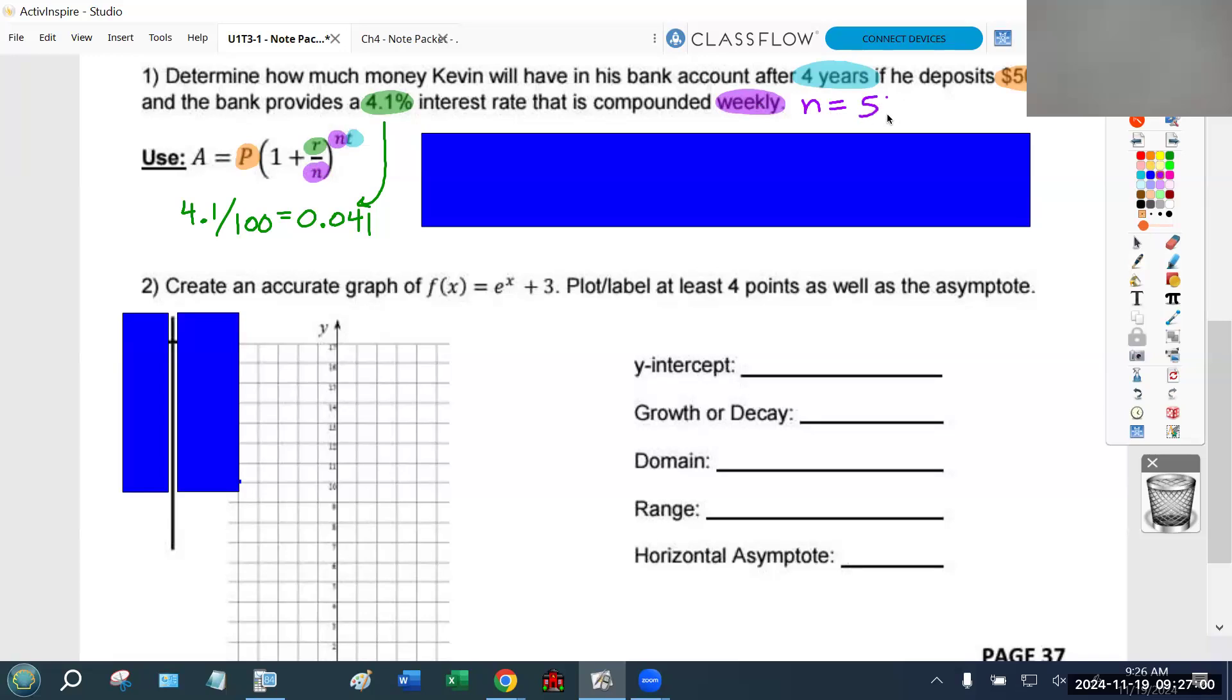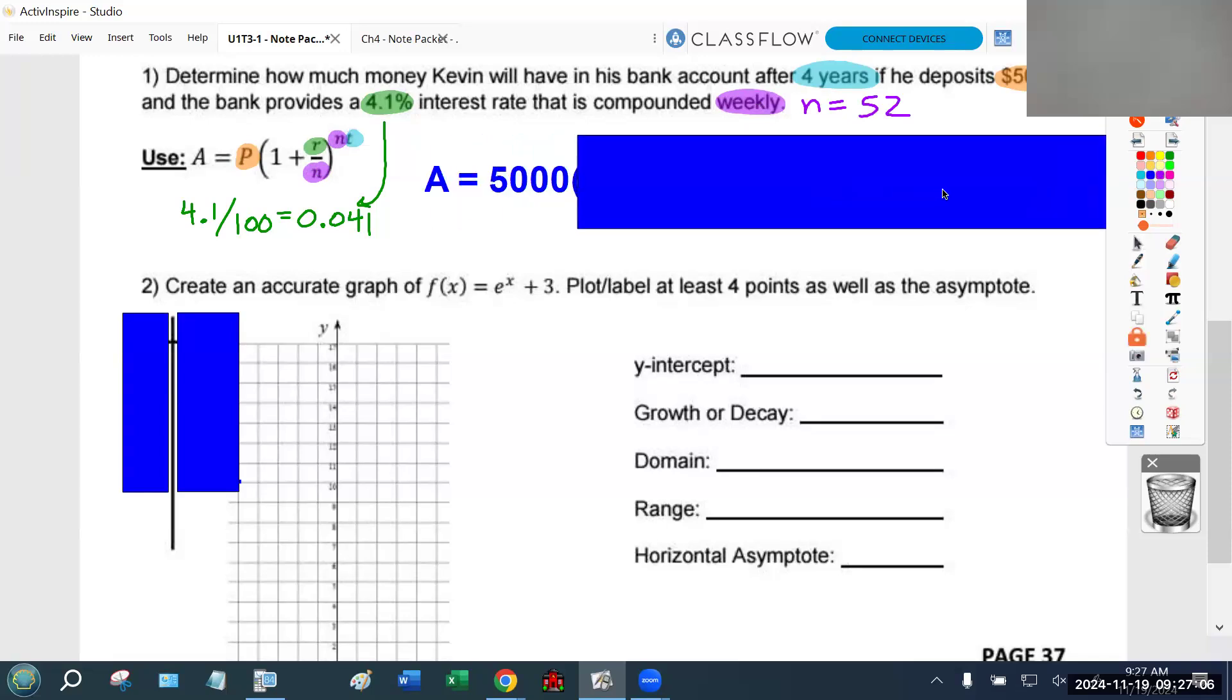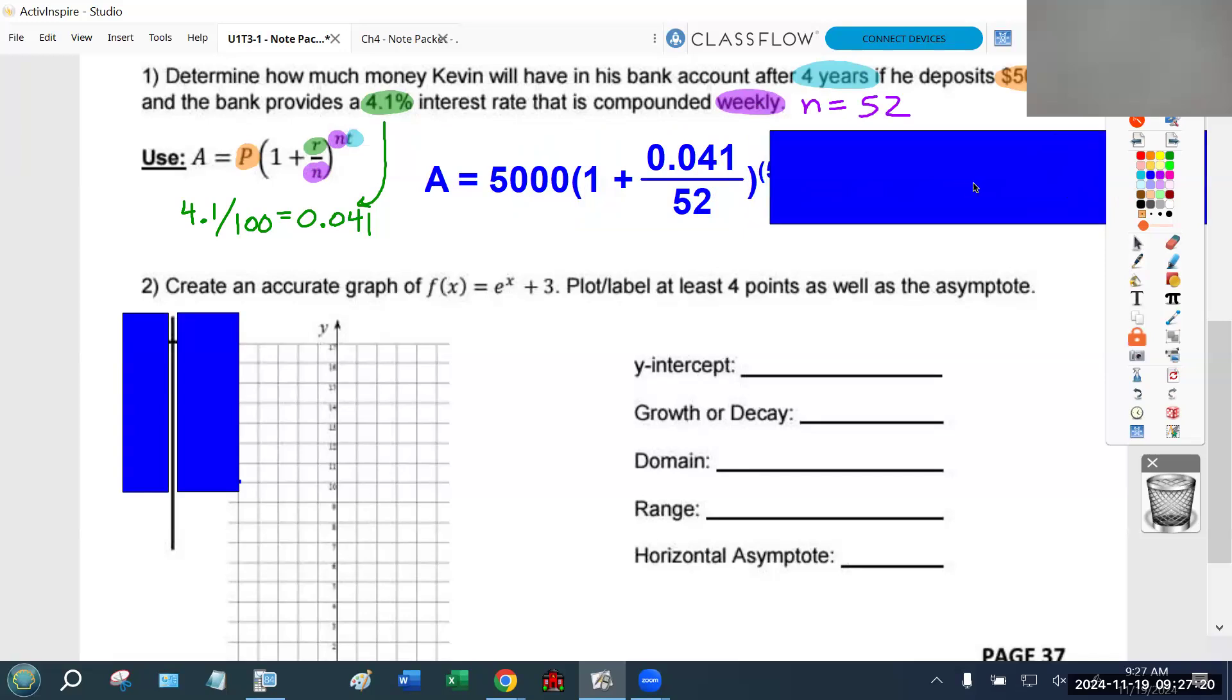That's basically saying the bank is offering 4.1% interest, but they're not going to give it to you all at once. They're going to cut it into 52 little micro payments. That means you're getting 52 payments spread out over the year, and that's going to happen every single year, in this case, for four years.